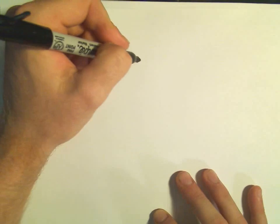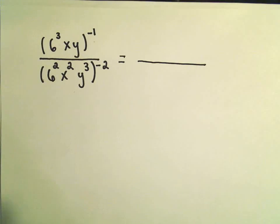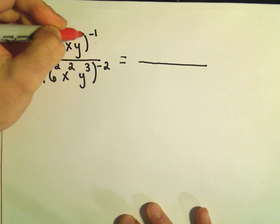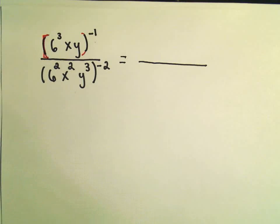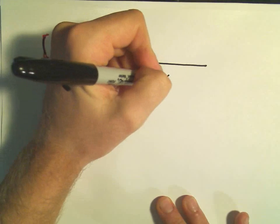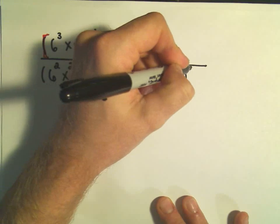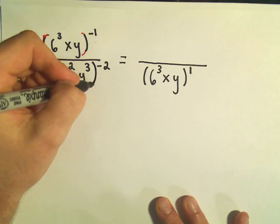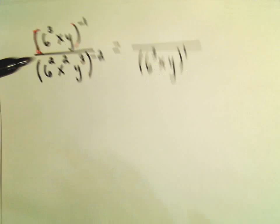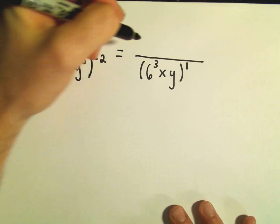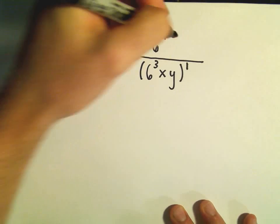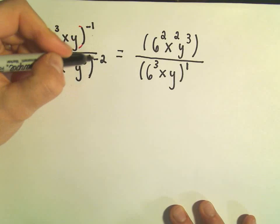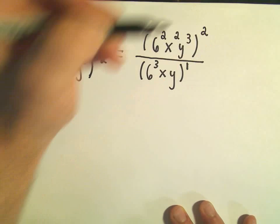In this one, I'm going to do what I said I could do on the first example. If you look at this part, this has the exponent of negative 1. So everything that's inside the parentheses, that 6 cubed, x, y, we could move that to the denominator and make it to the positive first power. Likewise, the thing in the denominator, the 6 squared, x squared, y cubed to the negative second, I can put that on the top as 6 squared. And notice I'm not doing anything to the inside. I'm just rewriting it. The thing that changes is the exponent outside. So that'll become to the positive second power.